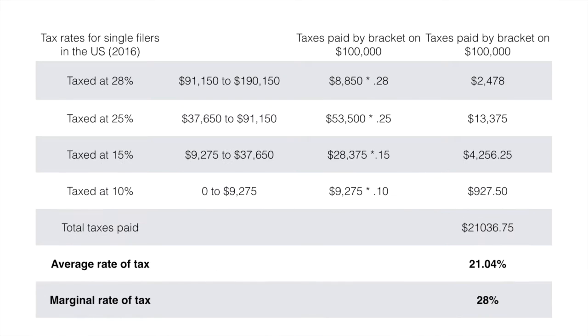The first column lists the tax rates for single filers of US taxes in 2016. Different levels of your income are taxed at different rates. These ranges are visible in the second column.